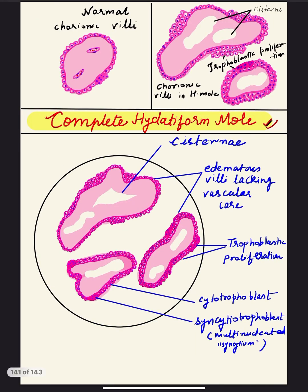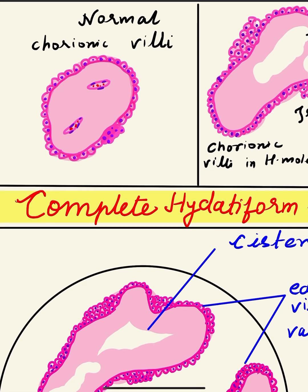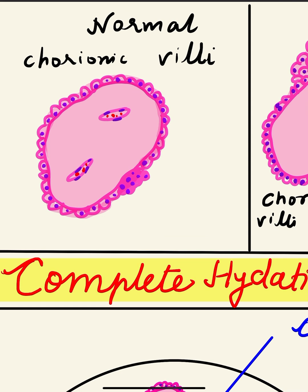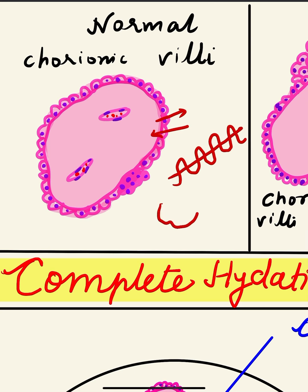Now we come to how to draw the diagram of complete H mole. In complete H mole there is proliferation of chorionic villi and hydropic degeneration of the chorionic villi. To understand the pathology and how to draw this diagram, we should know how a normal chorionic villus looks. These villi are part of the placenta and are responsible for transfer of nutrients between maternal blood and fetal circulation. On cross-section, villi look like finger-like projections.